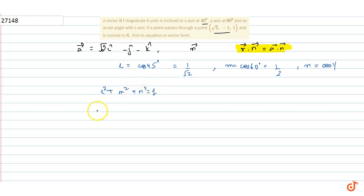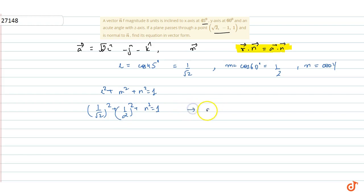Using the identity l² + m² + n² = 1: (1/√2)² + (1/2)² + n² = 1, which gives 1/2 + 1/4 + n² = 1. Therefore n² = 1/4, so n = 1/2.